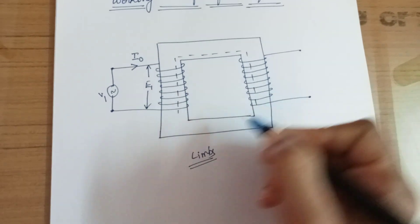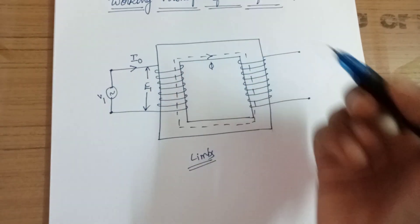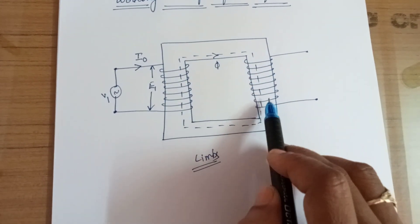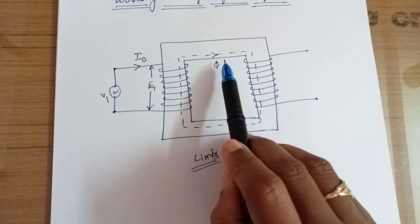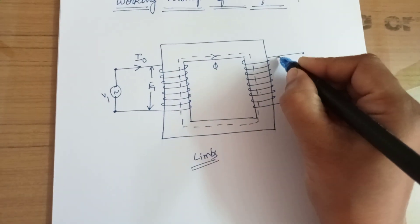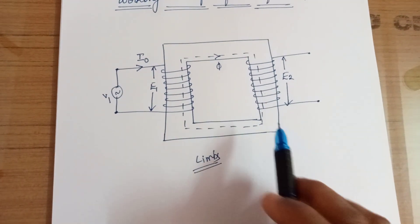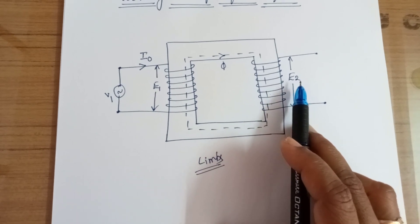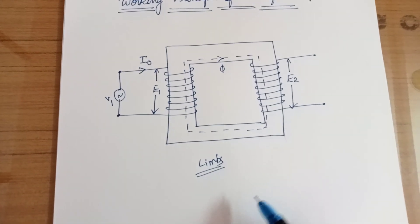The core has least reluctance so that flux can pass through it easily. For convenience, we represent only one imaginary flux line — let us call this phi. This flux is also an alternating quantity. On the secondary side: the core is a conducting material (conductor), there is a magnetic field from the flux, and the alternating flux provides relative motion — so all three requirements of Faraday's law are satisfied. Therefore we get another EMF on the secondary side. This EMF is called the mutually induced EMF, and so the transformer operates on the mutual induction principle.